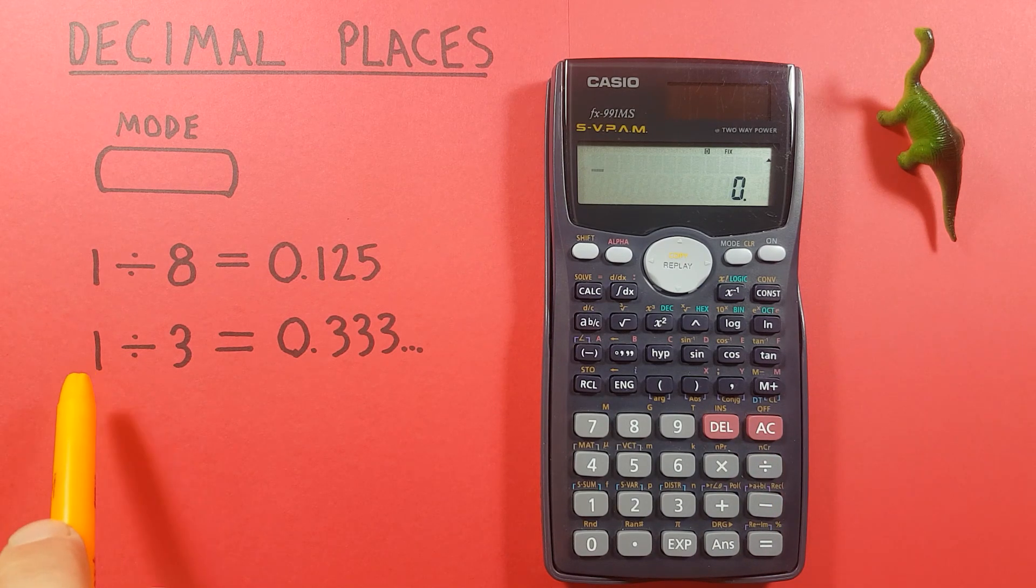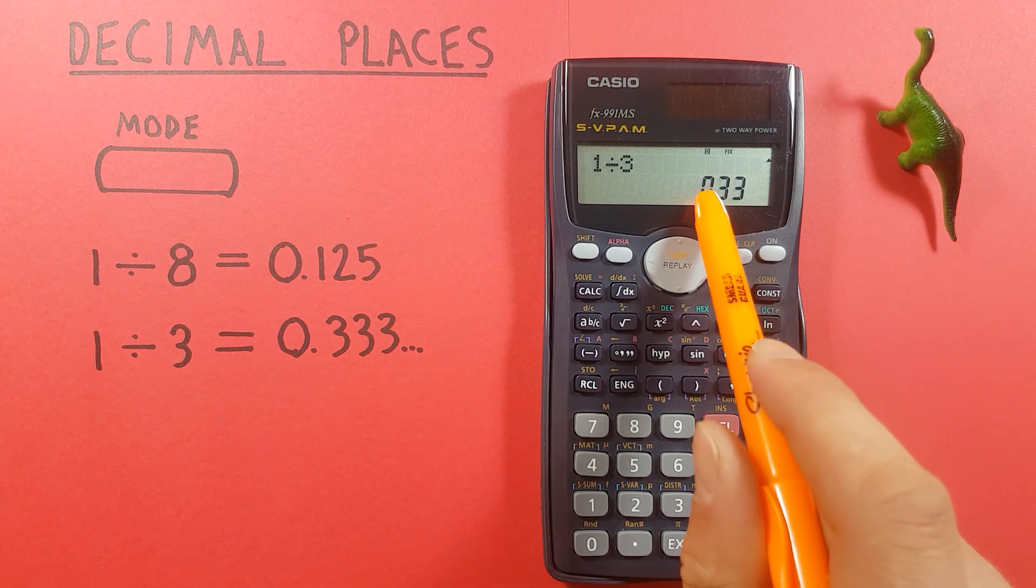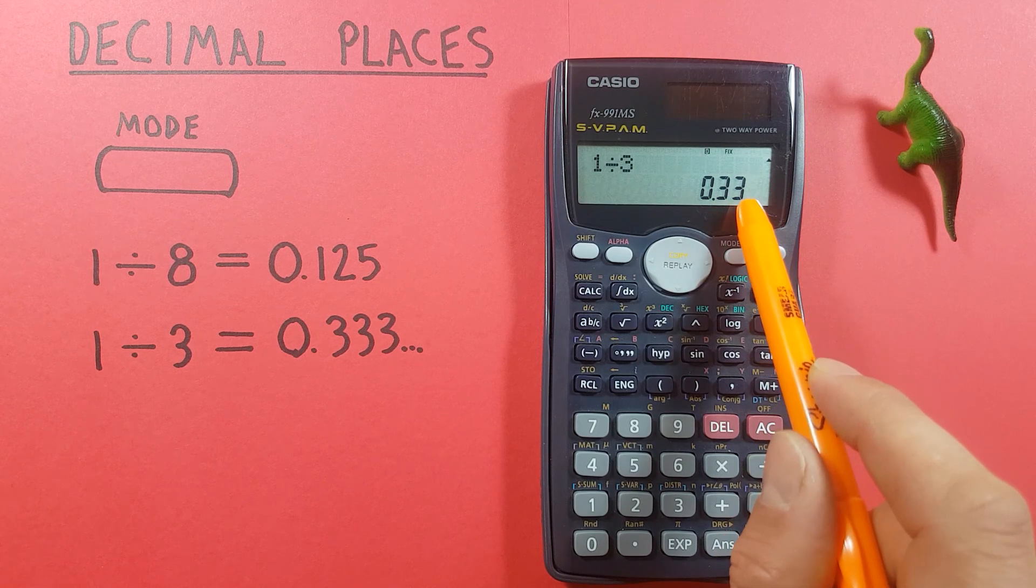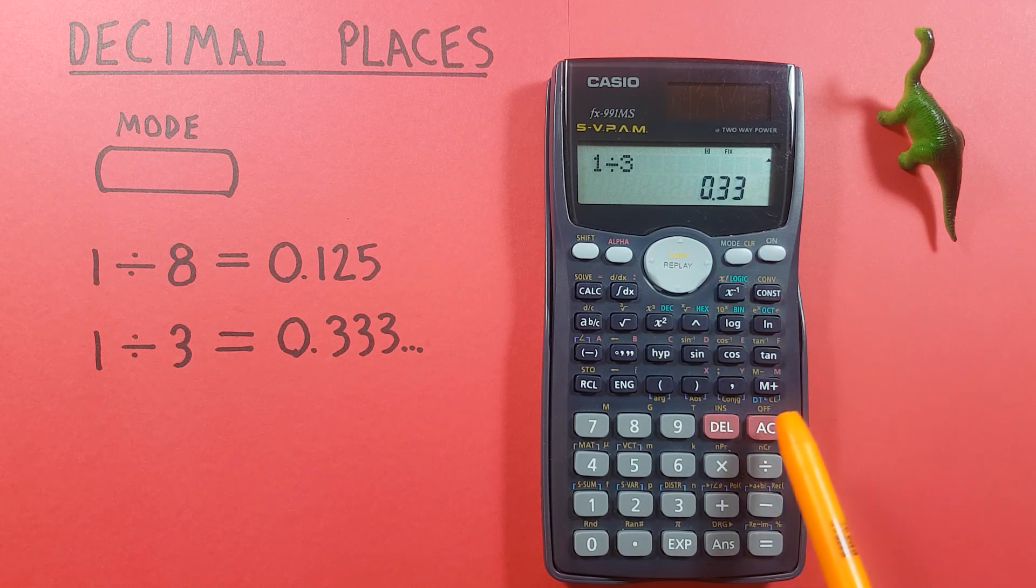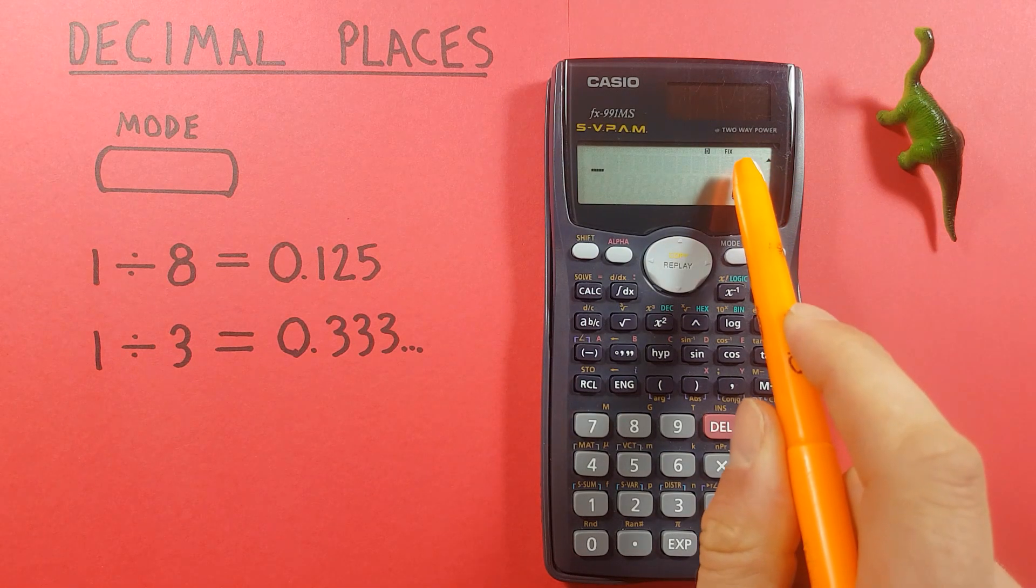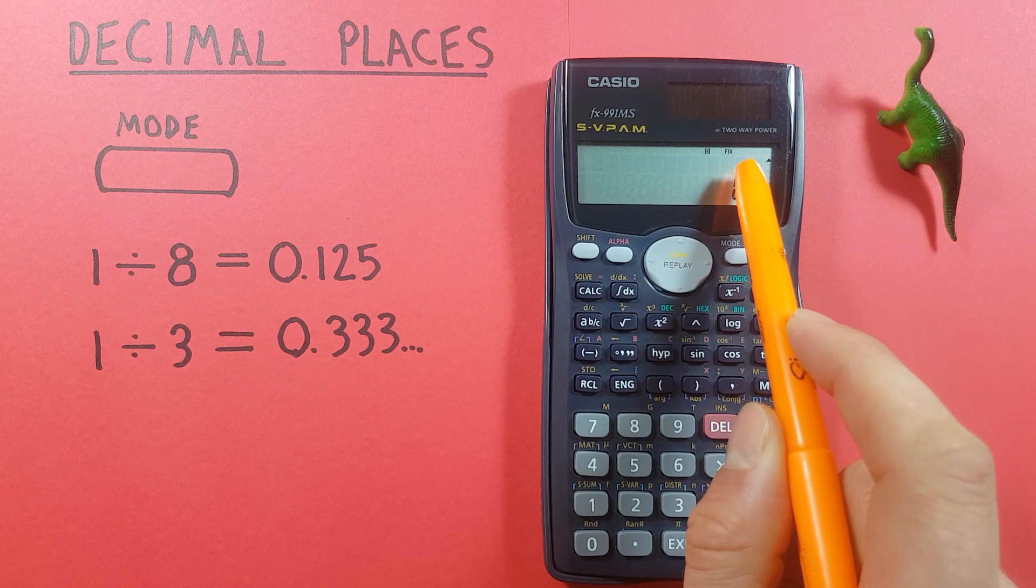This works as well with the 1 divided by 3. You can see we now get two decimal places again and the 3 has not been rounded up because that's less than 5. When you're in this mode you'll see a fix appear at the top of the screen. This lets us know we're in fixed mode and our answers will be rounded.